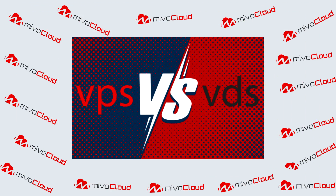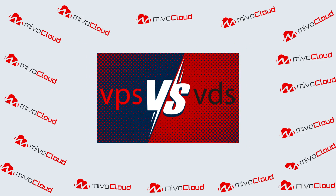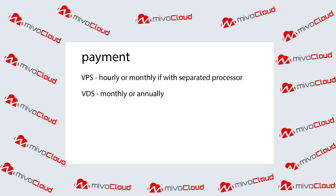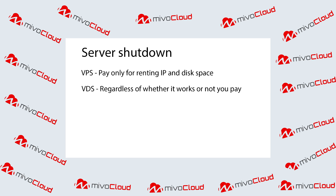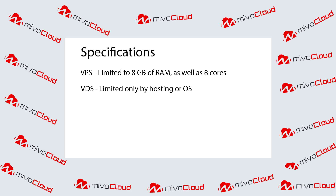Now we will compare VPS and VDS and talk about what is better to use and why. The first criterion is payment: VPS is paid hourly, while VDS has a monthly payment. The second criterion is stopping the server: using VPS, you will pay only for the IP address and allocated disk space when stopped, so the price will be lower than when it is running. Using VDS, you pay the same price whether the server is running or not. The third criterion is server characteristics.